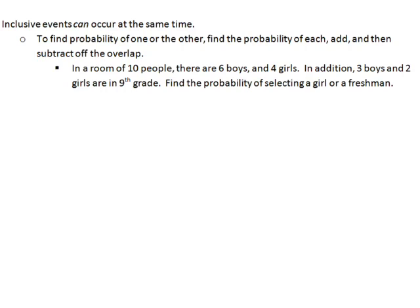Another way to categorize these ten people: three boys and two girls are in ninth grade, so you have a total of five people in ninth grade. Find the probability of selecting a girl or a freshman. You can have a freshman girl, which is what makes them inclusive because you can be both at the same time. So we first find the probability of being a girl, which is four out of ten.